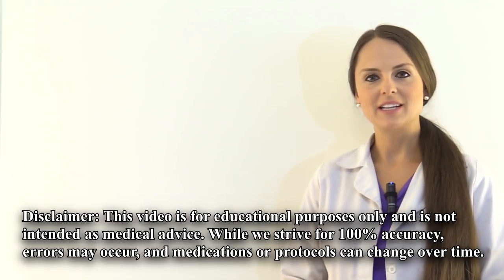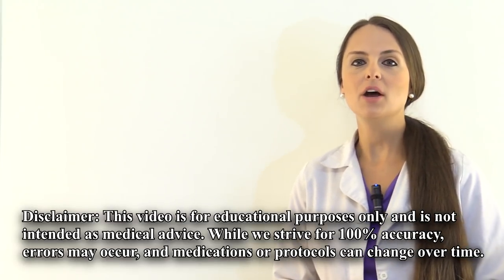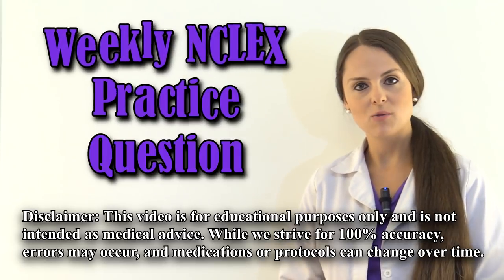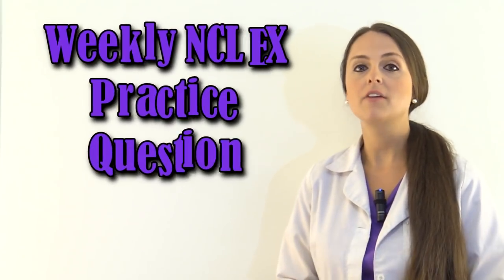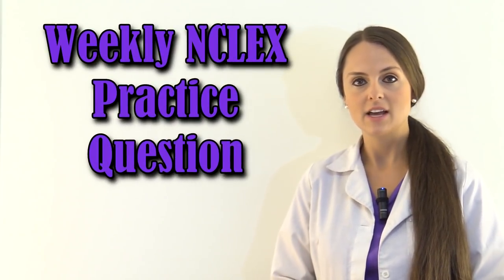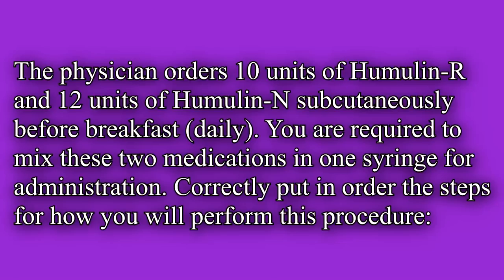Hey everyone, it's Sarah with RegisterNurseRN.com and in this video I'm going to be going over our weekly NCLEX practice question. Don't forget to check out the other questions in this series. The physician orders 10 units of Humulin R and 12 units of Humulin N subcutaneously before breakfast daily. You are required to mix these two medications in one syringe for administration. Correctly put in order the steps for how you will perform this procedure.